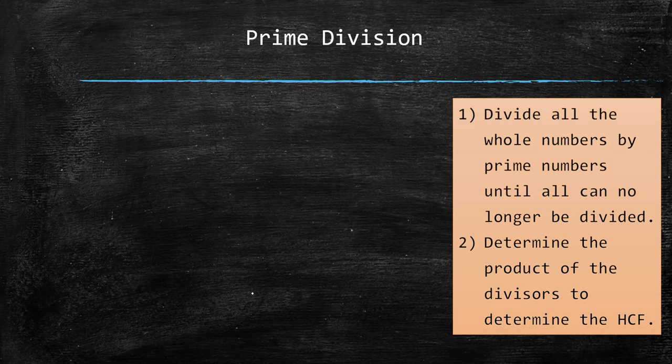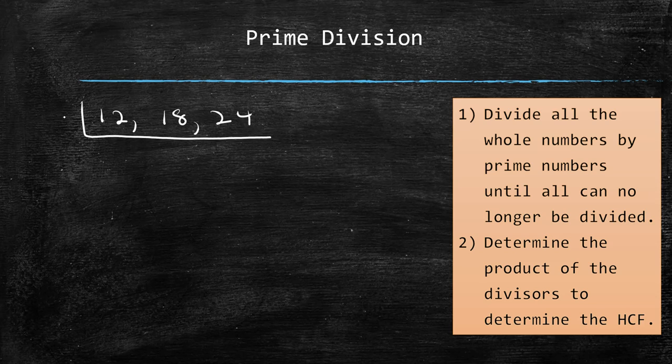The last method is called prime division. We divide all the whole numbers by prime numbers until all can no longer be divided. First, we write the numbers 12, 18, and 24. The first thing we divide by is the prime number 2. We divide and get 6, 9, and 12.